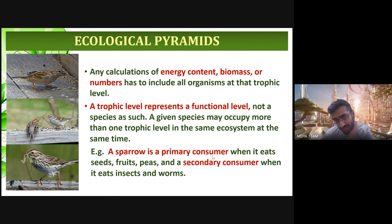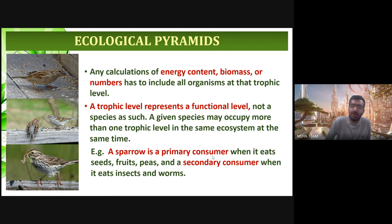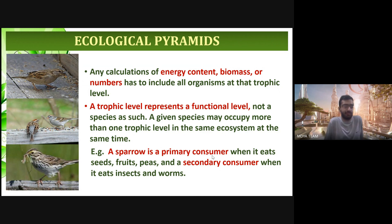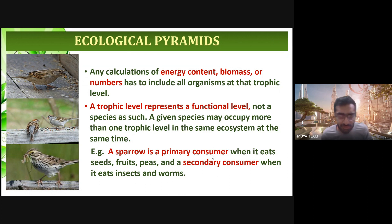If a question comes in the exam — for example as an assertion and reasoning — stating that a given species occupies only one trophic level, the answer would be that it depends on the situation: a species can occupy more than one trophic level. The example of the sparrow would justify that assertion in the reasoning section, signifying that a species does not remain at only one trophic level but can be at multiple trophic levels.